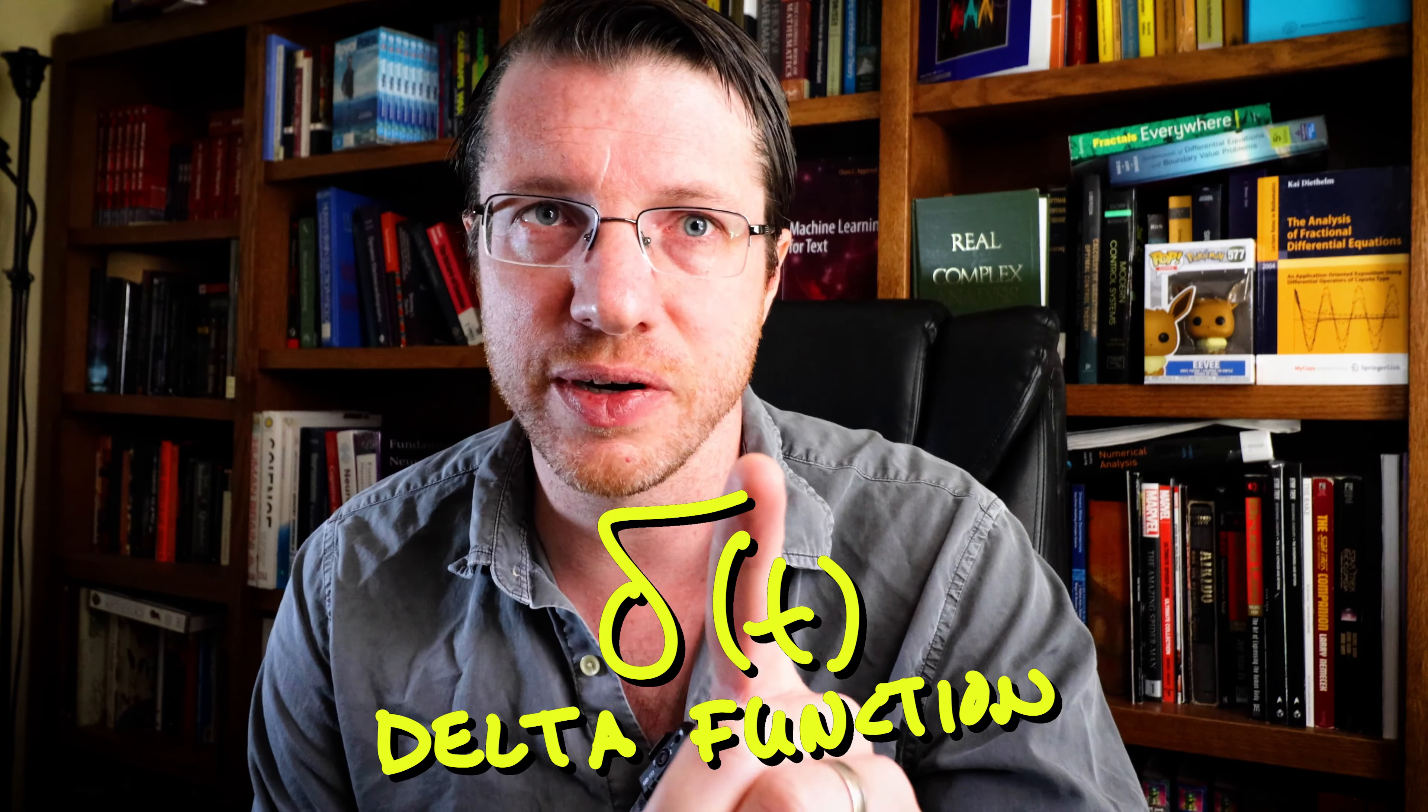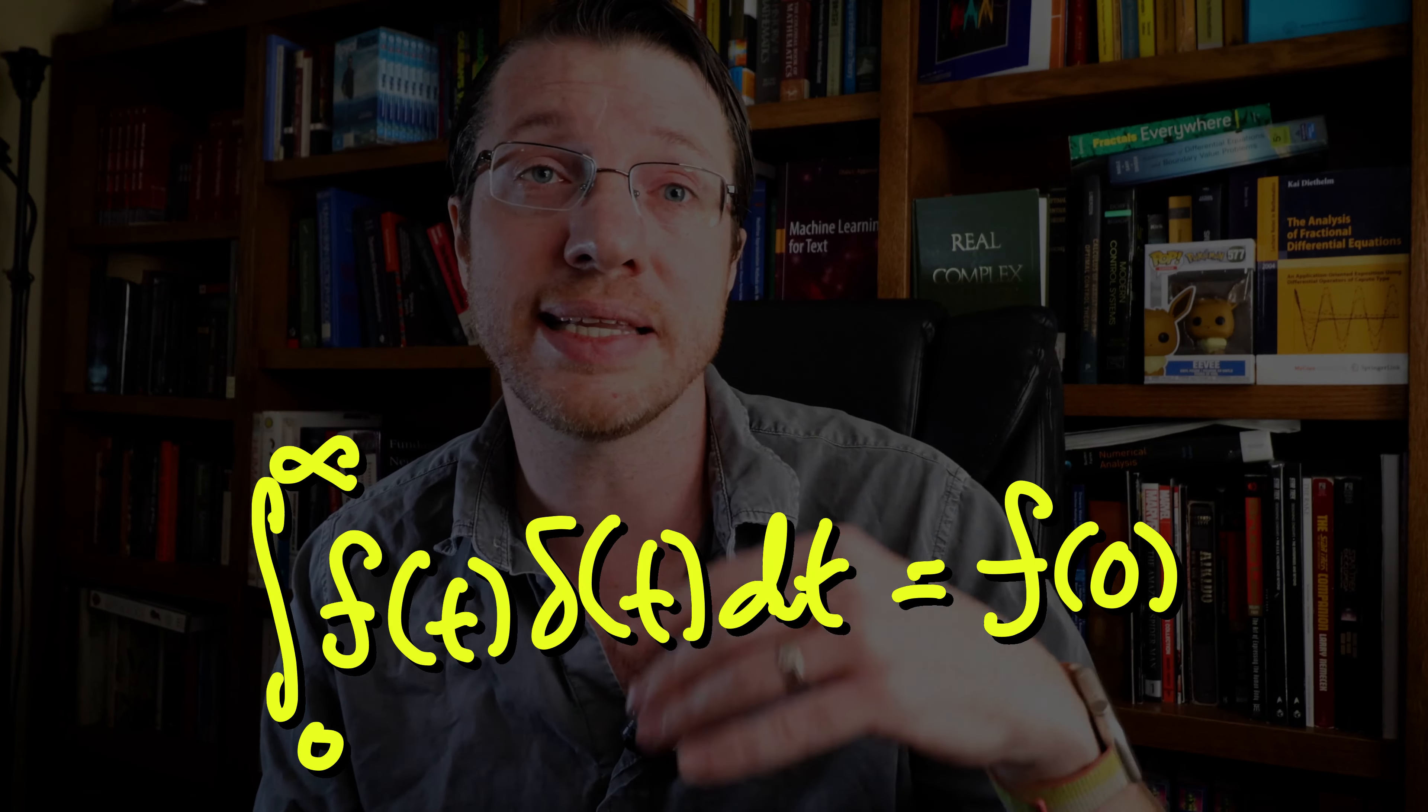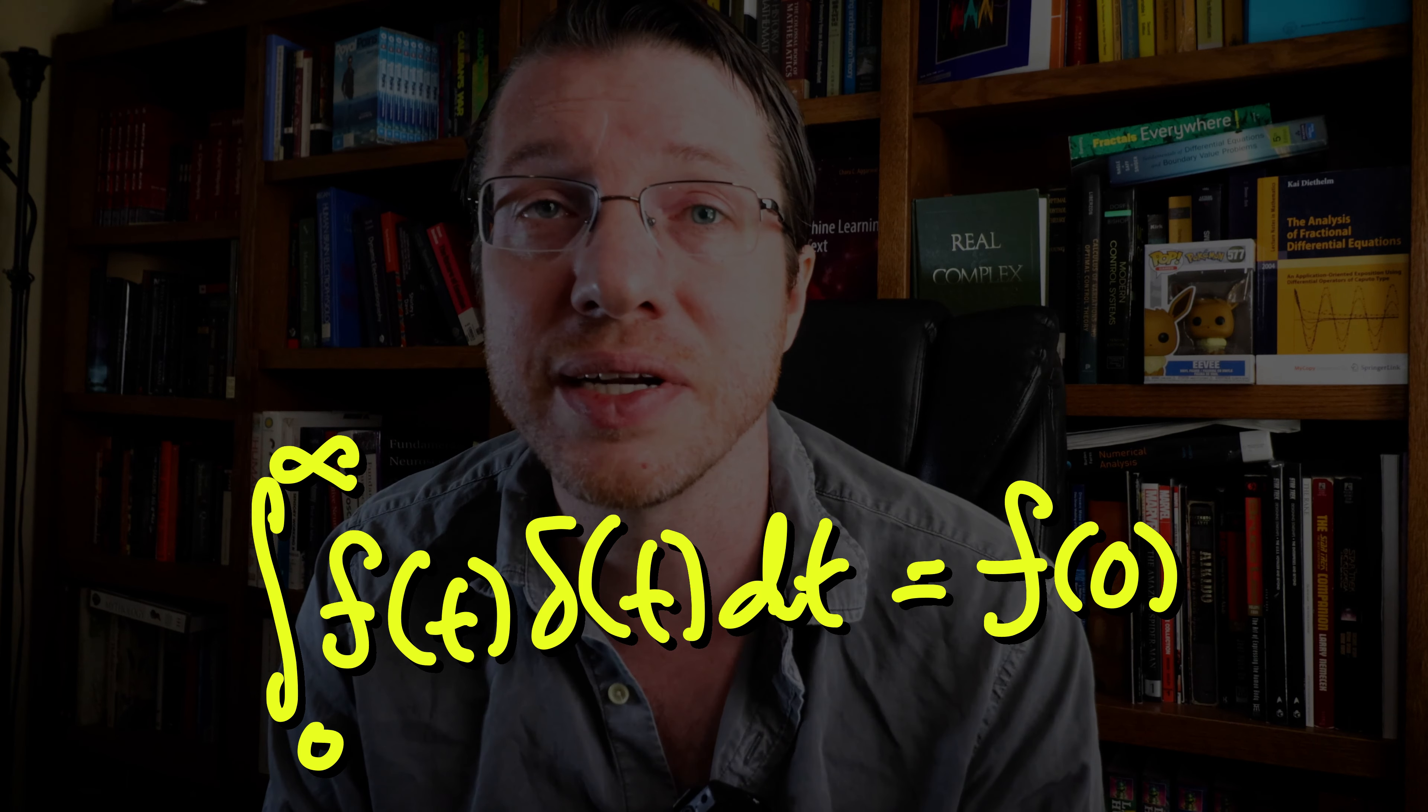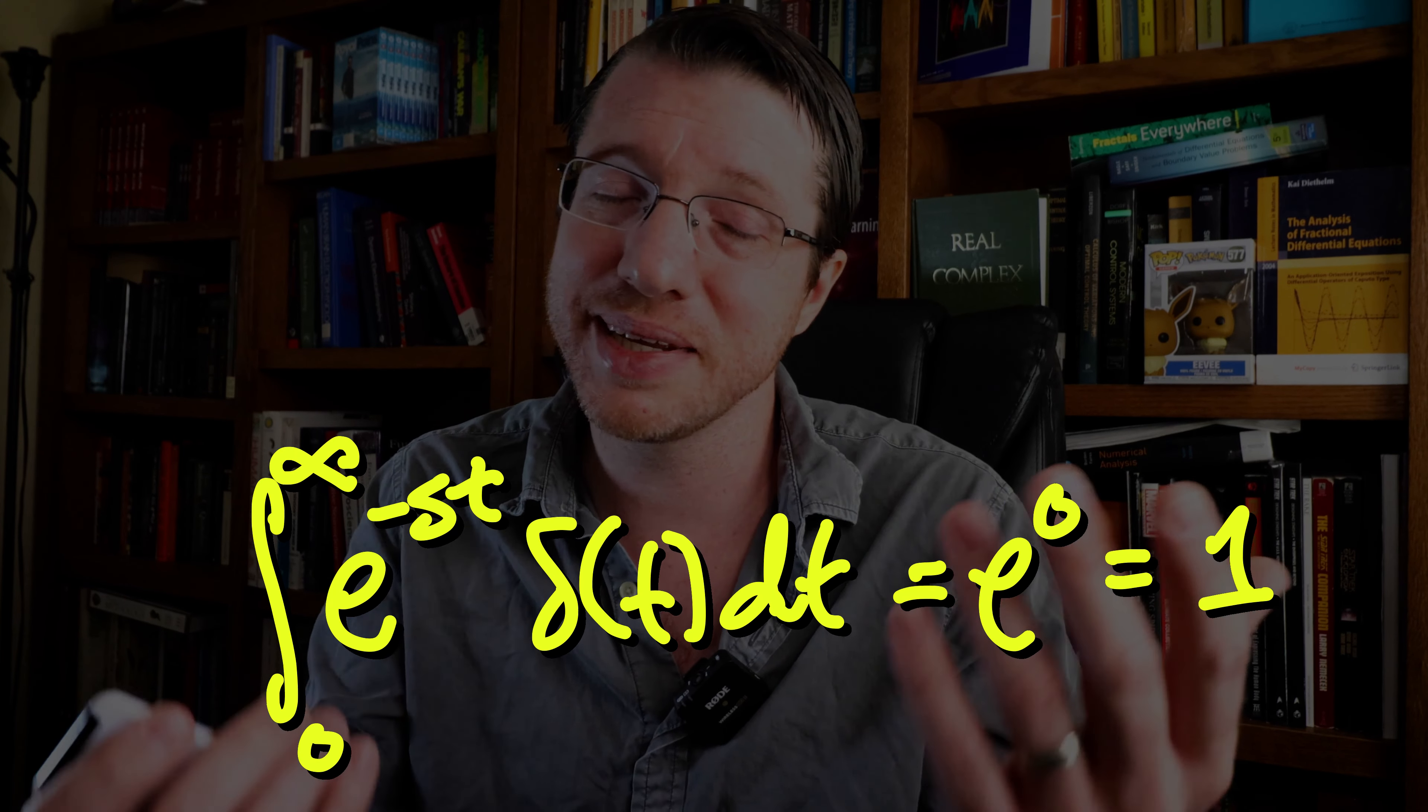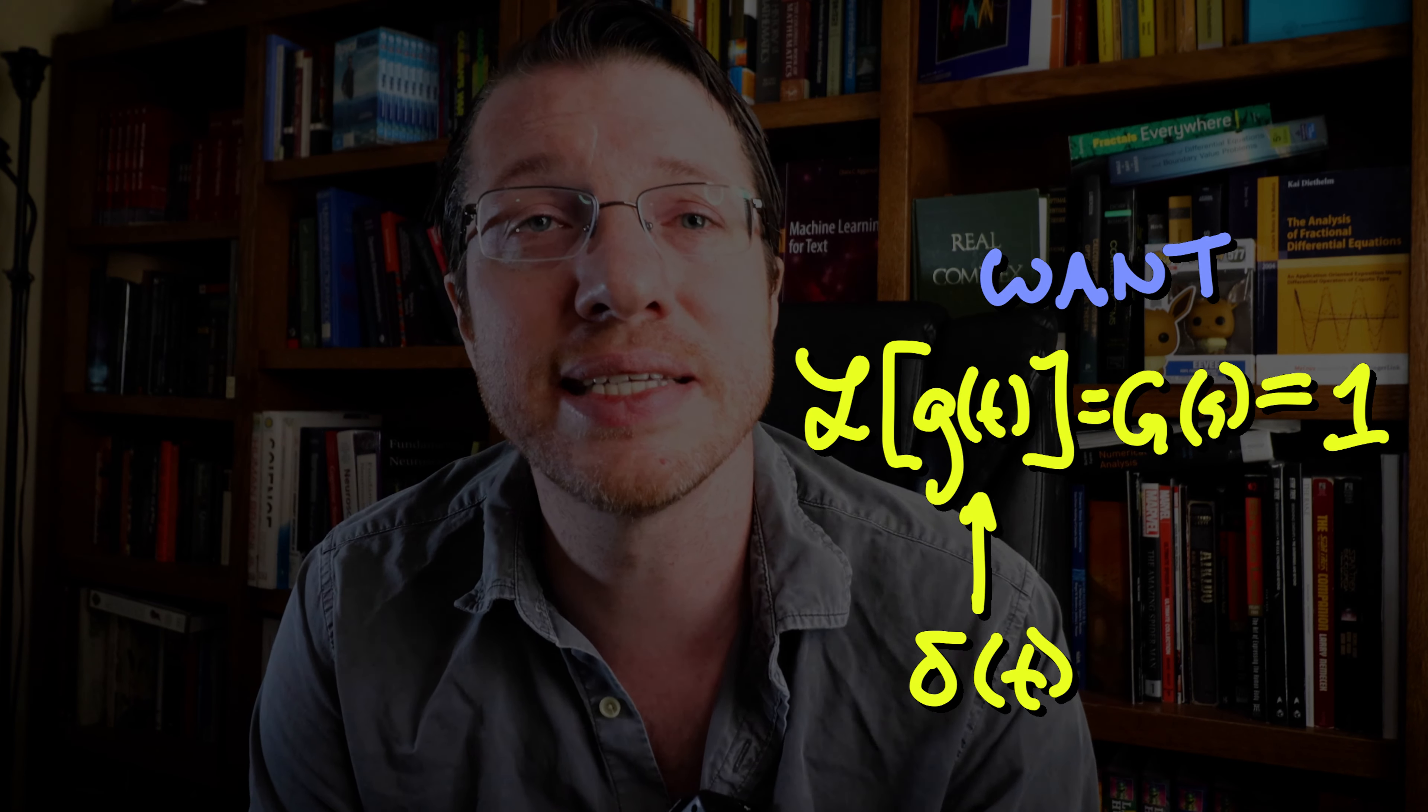Here comes the delta function. It's not really something that can exist outside of an integral, but when it is inside an integral, we see that the integral from zero to infinity of a function times the delta function returns the evaluation of that second function at zero. So the Laplace transform of the delta function, well, it's just e to the zero or one. Hence, the transfer function is what we get when we select g of t is equal to delta t.